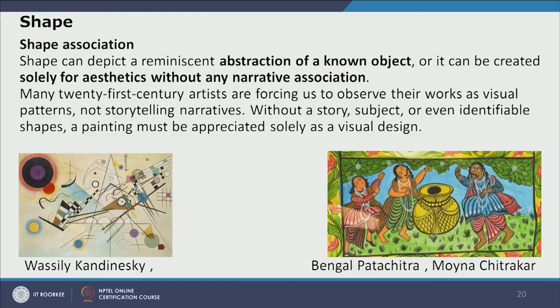A shape can be a reminiscent abstraction of a known object, depicting a narrative association, or it can have no meaning and serve solely an aesthetic purpose. Many 21st century artists force the user to look at a visual composition purely as an aesthetic composition. In Kandinsky's composition we see geometric shapes without any narrative association, while in a Bengal patachitra by artisan Moina Chitrakar, each shape has meaning associated with known objects — human beings, trees, and musical instruments.